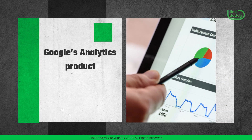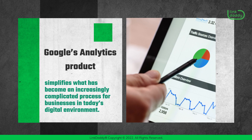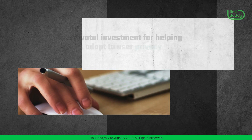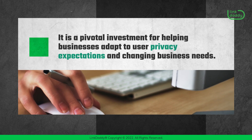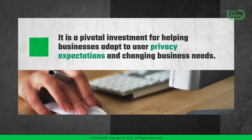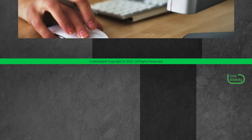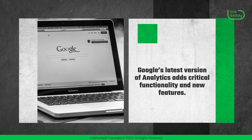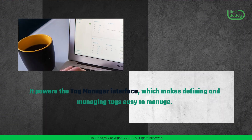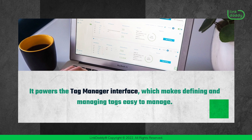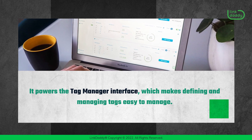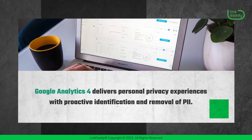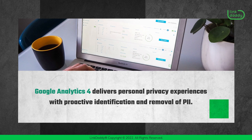Google's Analytics product simplifies what has become an increasingly complicated process for businesses in today's digital environment. It is a pivotal investment for helping businesses adapt to user privacy expectations and changing business needs. Google's latest version of Analytics adds critical functionality and new features. It powers the Tag Manager interface, which makes defining and managing tags easy to manage. Google Analytics 4 delivers personal privacy experiences with proactive identification and removal of PII.